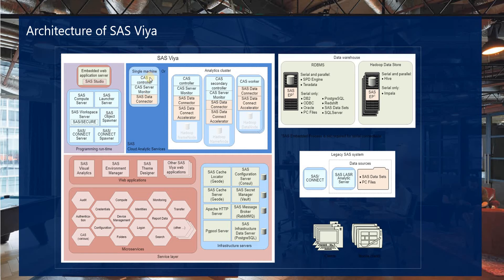In the single machine, we have SAS Studio, a cache controller, cache server, monitor, and the SAS data connector. But if we go for the distributed multi-tenant architecture, you can see we have the cache controller and a secondary backup cache controller — so if there's a problem with one controller, the backup controller will take over.